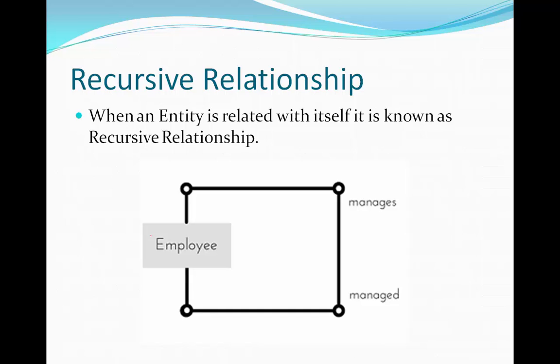The next type is recursive relationship. Recursive relationships are those in which a relationship is established among an entity and itself — meaning an entity is related to itself. Such relationships are called recursive relationships.